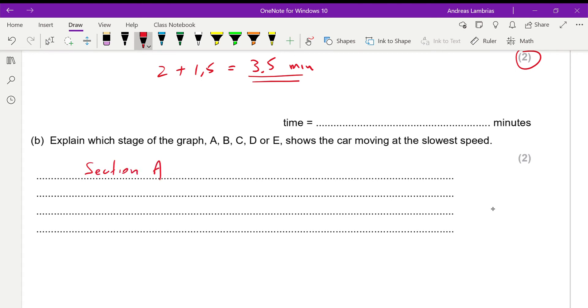You need to write down that section A is the one, and why? Because the gradient, which is the speed, has the smallest value or is less steep.